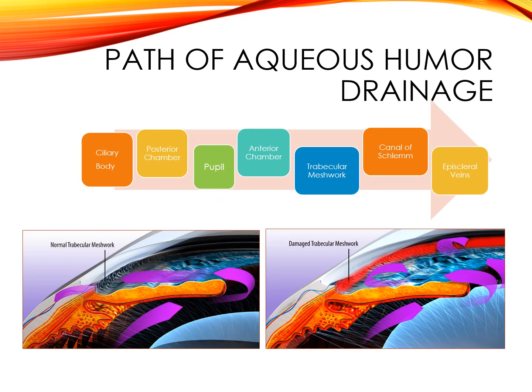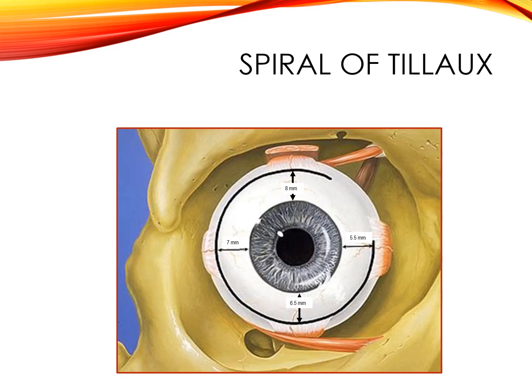Aqueous humor is produced in the ciliary body. It travels through the posterior chamber, through the pupil, and into the anterior chamber. It drains through the trabecular meshwork, the canal of Schlemm, and the episcleral veins, also referred to as aqueous veins. The spiral of Tillaux describes the insertion point of the medial, lateral, superior, and inferior recti muscles in relation to the limbus in millimeters. The medial rectus muscle inserts closest to the limbus and the superior rectus muscle inserts farthest from the limbus, though these values can vary from person to person.